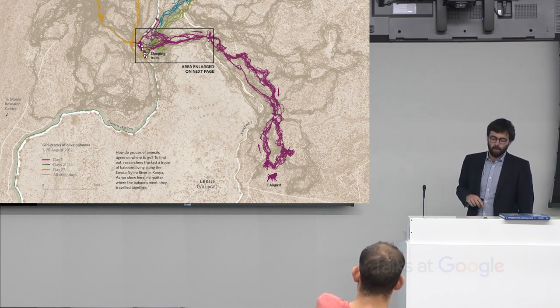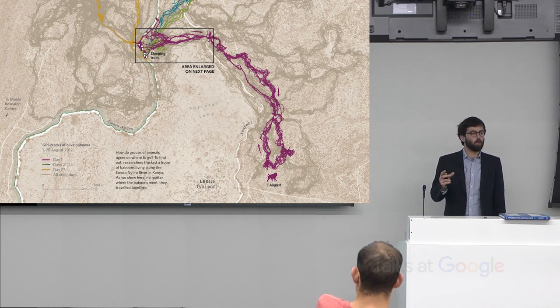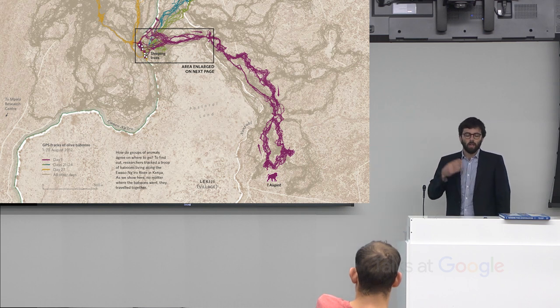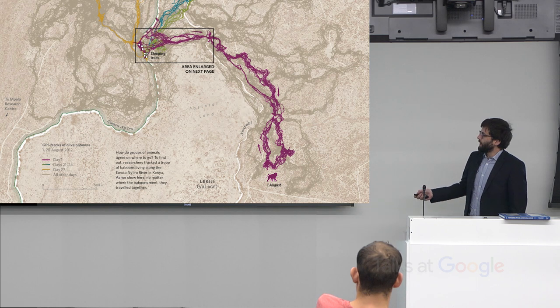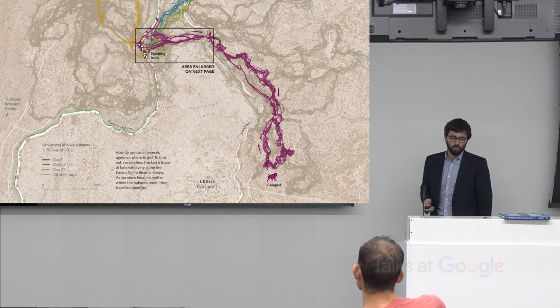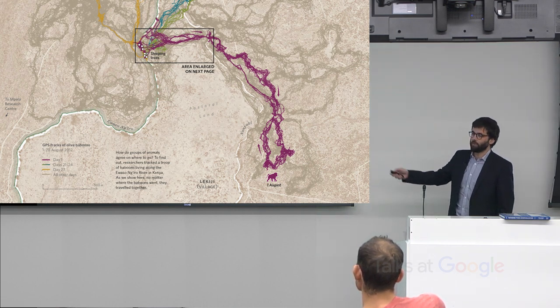This is a study where GPS loggers were placed on most of a troop of baboons, sampling their location every second over a three-week period — a lot of data points. You can see their daily movements: where they start sleeping, where they go out foraging, and then loop back. The moment we chose to highlight was the baboons running across an area of cropland where they were harassed by local herders and farmers, so it was a big deal for them to cross.